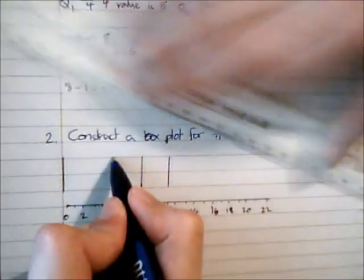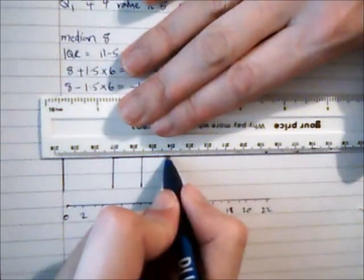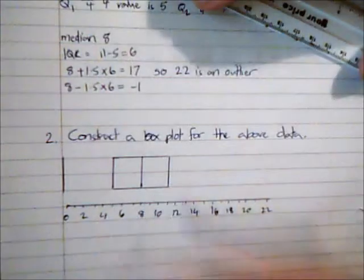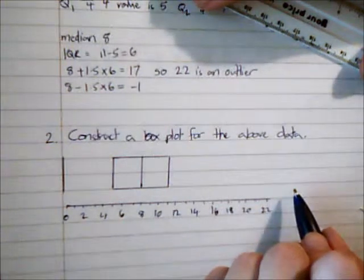The three quartiles have the tops and the bottoms joined to actually create a box, which is where the box plot gets its name from.